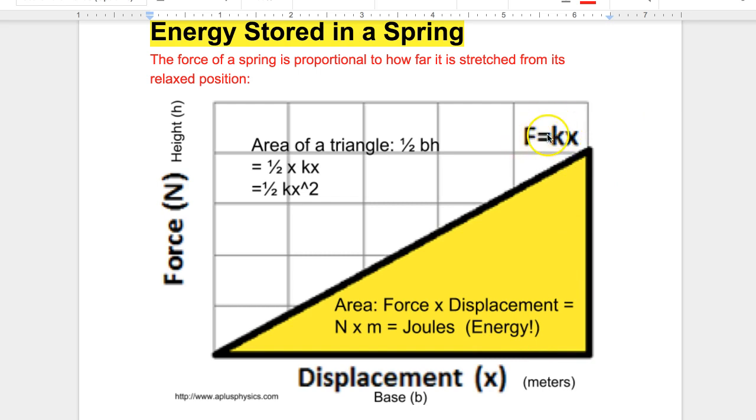When we multiply those two times each other, we get one half kx squared. The one half because it's not a full square, so one half base times height. The base is x, the height is kx. So to find our energy, it's one half kx squared. That distance you stretch or squish a spring is very important.